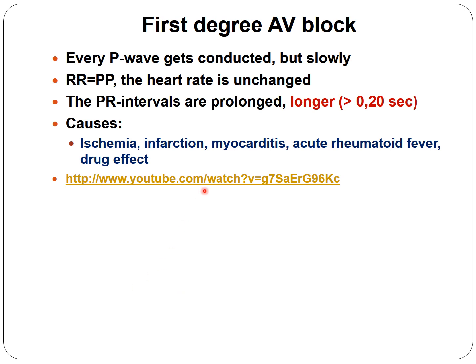Let's start with the 1st degree AV block. In this case, every P wave gets conducted, but slower. The RR and PP intervals are equal, so the heart rate is unchanged and it's rhythmic. The PR intervals are prolonged, but every PR is the same and it's longer than 0.2 seconds. Normally, the PR interval varies depending on heart rate — if you have tachycardia, the PR is shorter; with a slower heart rate, the PR is longer.